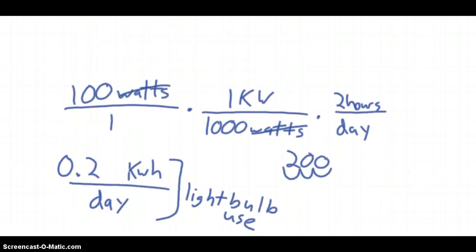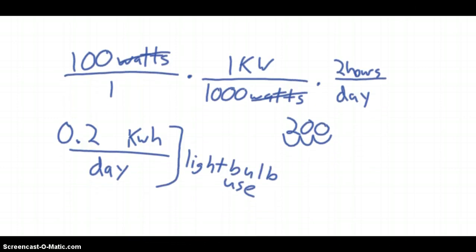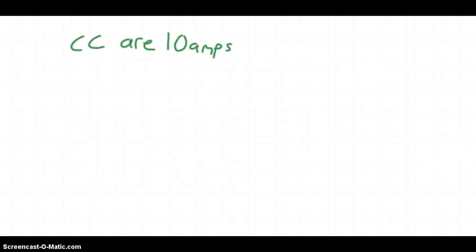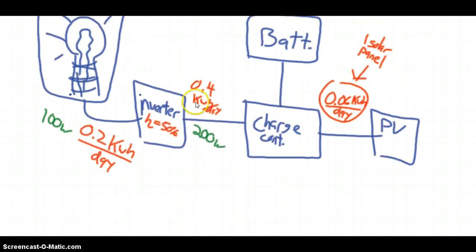So now, let's look at energy. So now that we know power with the charge controller, for the PV and the battery, we really need to know energy, because we need to know how many hours they're producing and how much the light bulb's using. So the first thing we want to figure out is how much energy the light bulb uses per day. So how we do that is 100 watts, and then convert it to kilowatts using this conversion, and then multiply by how many hours a day we're using it, and that is 0.2 kilowatt hours per day, and that's the light bulb use. So that's why we wrote that up here in red.